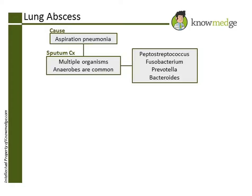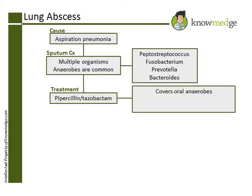Of the above answer choices, Choice C, Piperacillin-tazobactam, is the best answer as it will cover oral anaerobes, including those with beta-lactamase strains, while penetrating above the diaphragm. Let's go over the other answer choices.